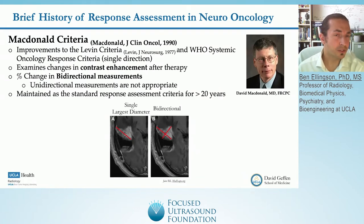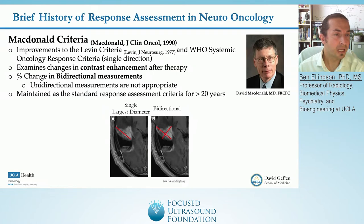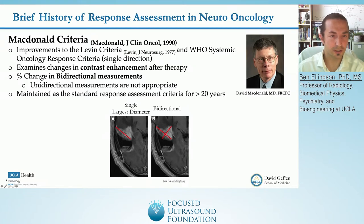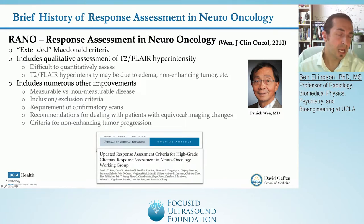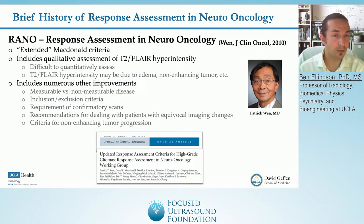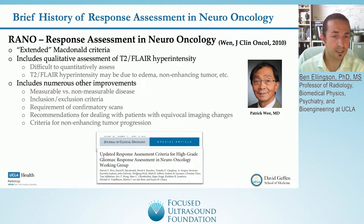This led to development of what was known as the McDonald criteria in 1990 in order for us to look at response assessment in malignant gliomas. These were improvements upon previous criteria like the Levin criteria and WHO criteria in that it looks at contrast enhancement and bidirectional measurements of the contrast-enhancing lesion, maintained as the standard response assessment for over 20 years. In 2010, Patrick Nguyen and the RANO working group improved upon the McDonald criteria, adding qualitative assessments of T2 and FLAIR hyperintensity to look at non-enhancing tumor components, the definition of measurable and non-measurable disease, and new inclusion and exclusion criteria.